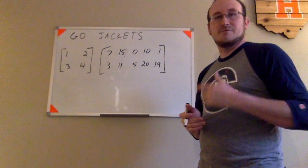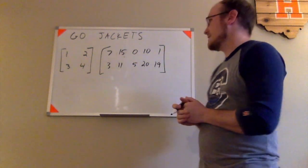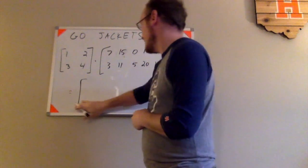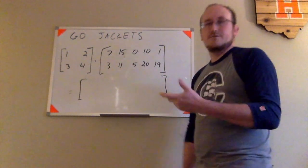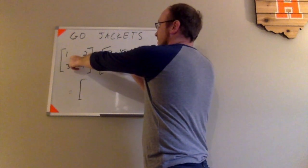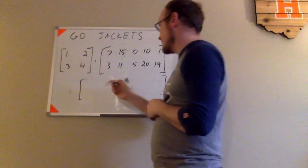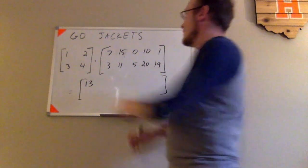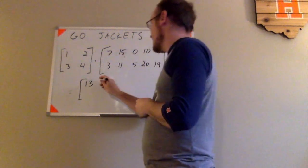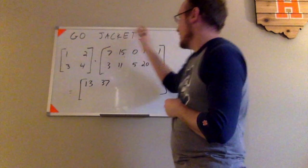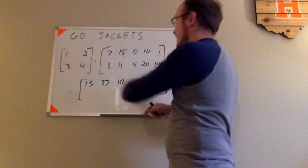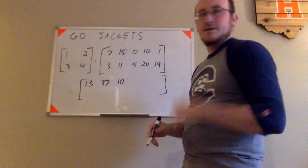Now we need to perform the matrix multiplication. To do this, I take the first row times the first column: 1 times 7 is 7, plus 2 times 3 is 6, giving 13. First row, second column: 1 times 15 is 15, plus 2 times 11 is 22, giving 37. First row, third column: 1 times 0 is 0, plus 2 times 5 is 10, giving 10. First row, fourth column: 1 times 10 is 10, plus 2 times 20 is 40, giving 50.